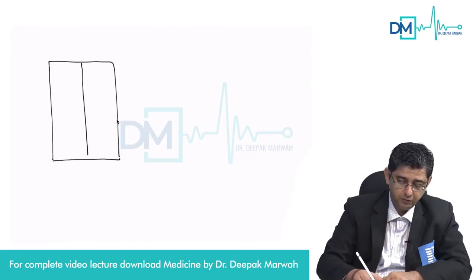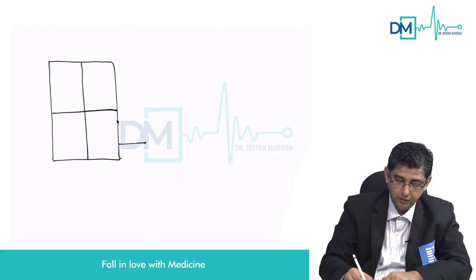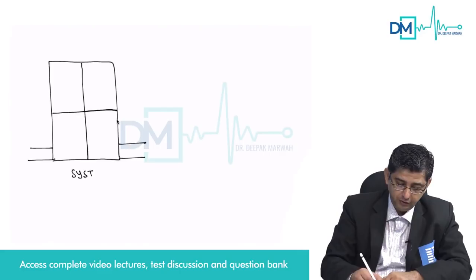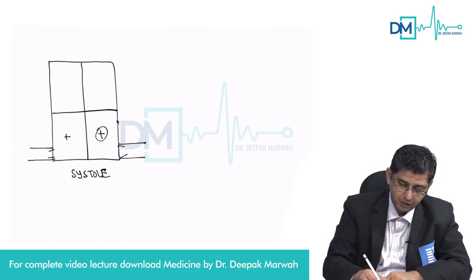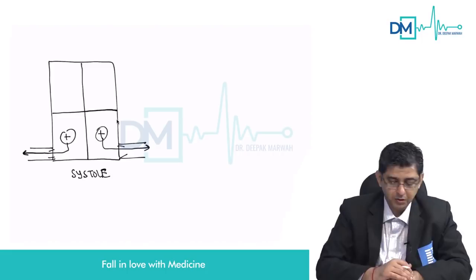I'll be describing a different murmur. The first diagram shows ventricular systole where the ventricles are generating force, causing opening of the aortic and pulmonic valves, so blood is racing into the aorta and into the pulmonary artery.